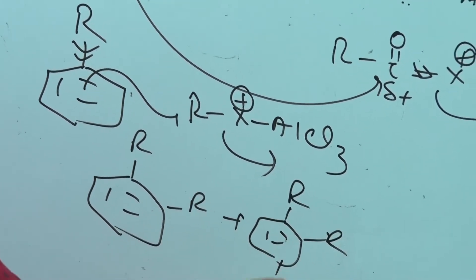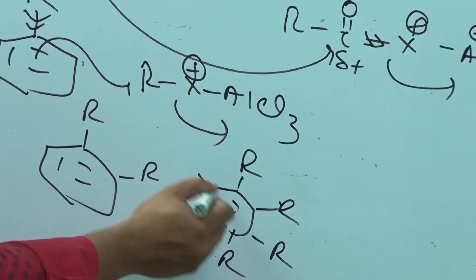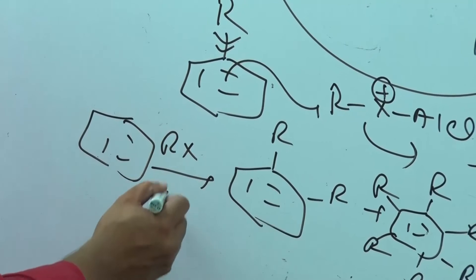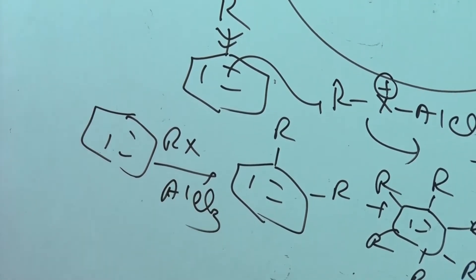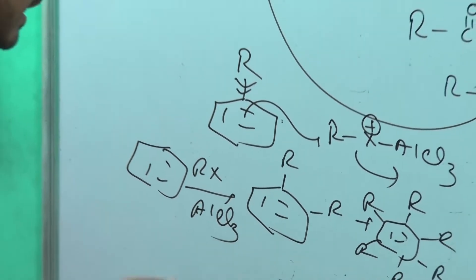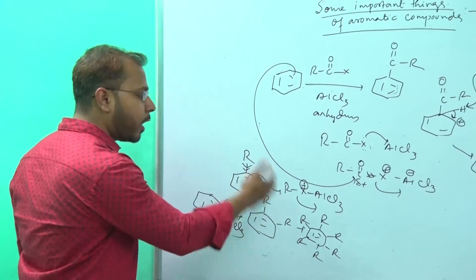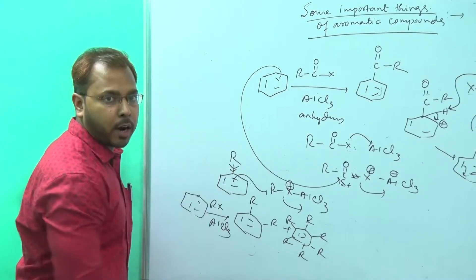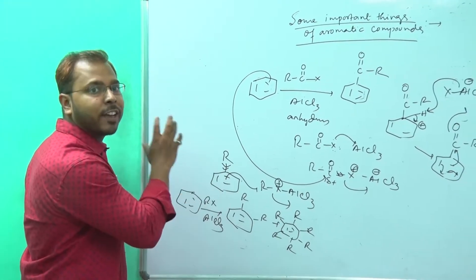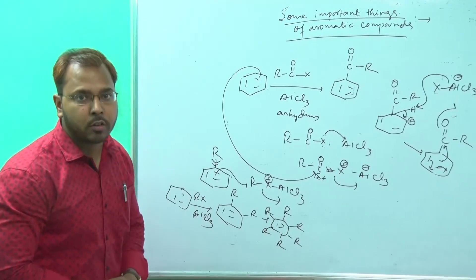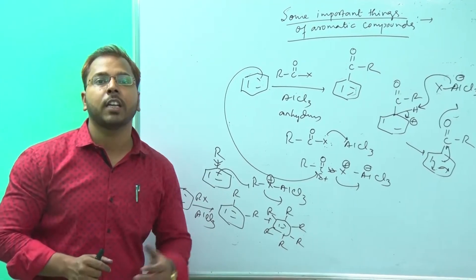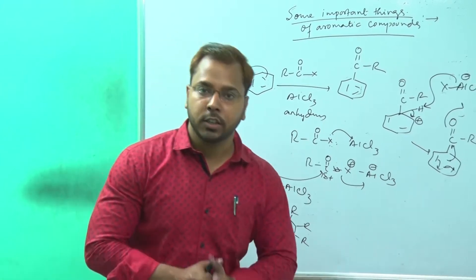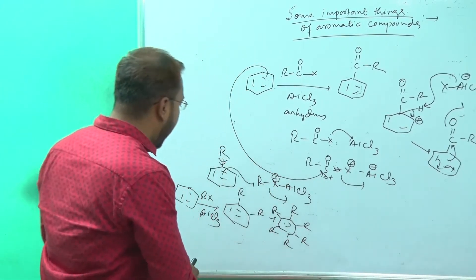If we give benzene, RX, and anhydrous AlCl3, there is no guarantee that only one R group enters. More and more R groups can enter due to polyalkylation. This makes Friedel-Crafts alkylation a very disadvantageous method. Friedel-Crafts acylation is therefore a much better method than alkylation.